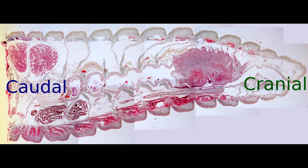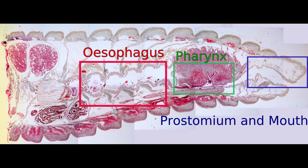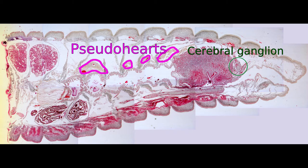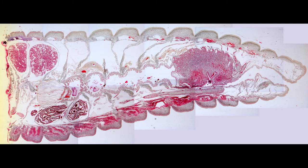If we follow the mouth caudally we can find the pharynx and then the esophagus surrounded by the calciferous gland. We can spot elements of the nervous system such as the cerebral ganglion, the pseudo hearts of the circulatory system, and the testes and seminal vesicles of the reproductive system. Let's take a more detailed look at each of these systems individually.